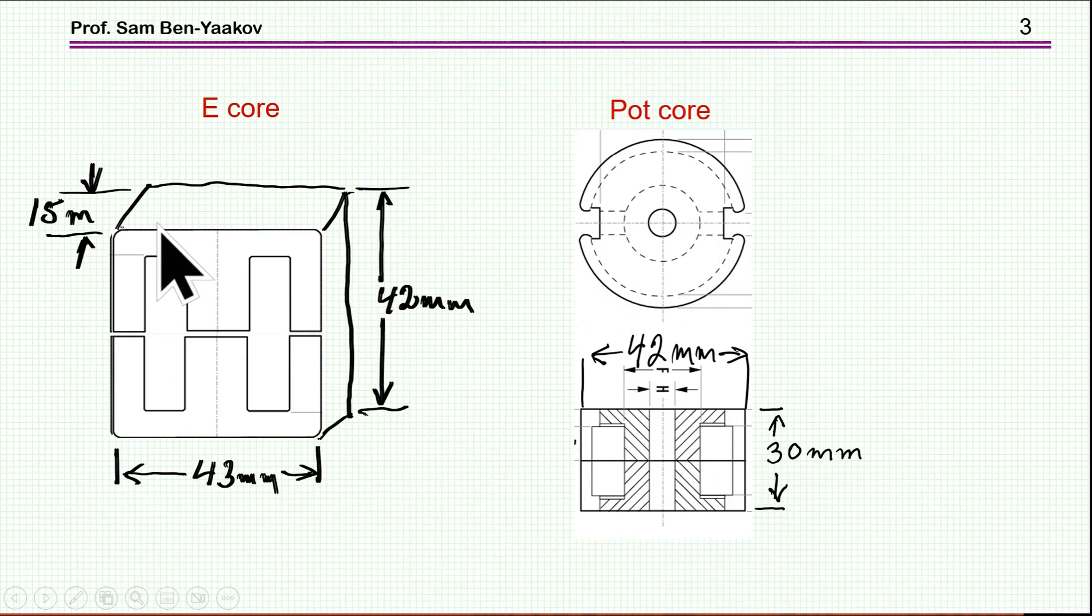Notice that in the case of the pot-core and E-core, the width is about the same, but here we have 15 millimeters, while in the case of the pot-core it's of course round, so we have much more ferrite here. The pot-core has more ferrite than the E-core and we'll see it in a minute.